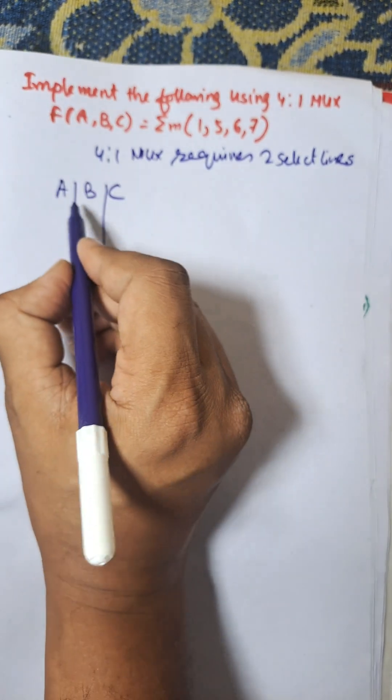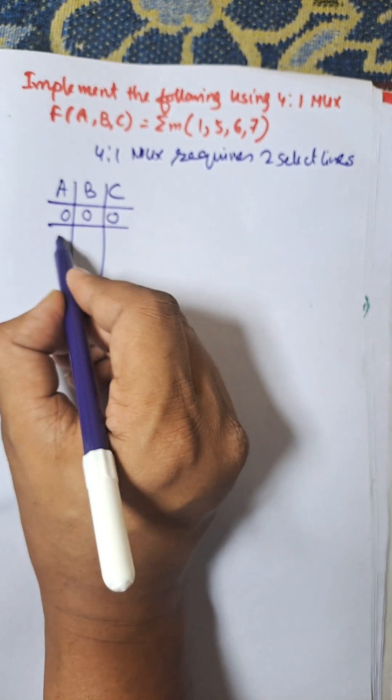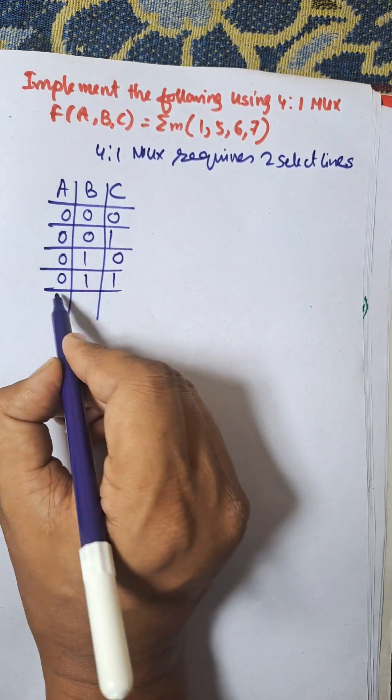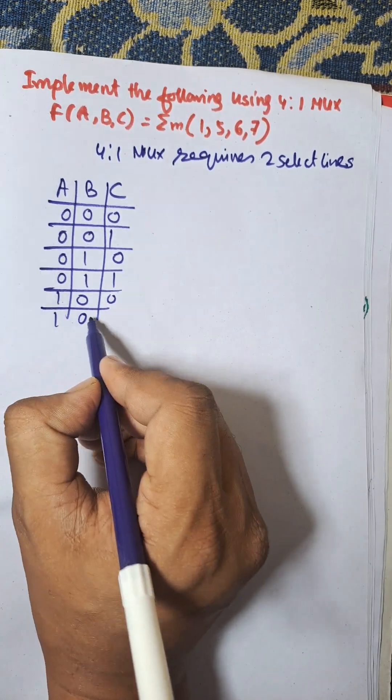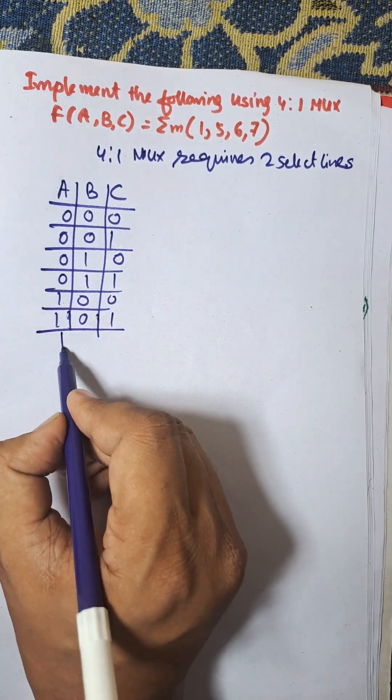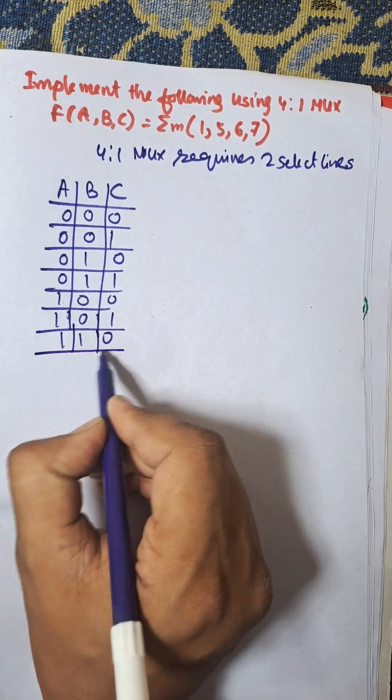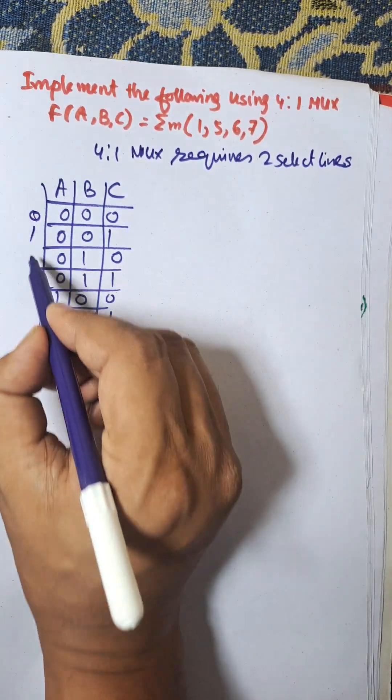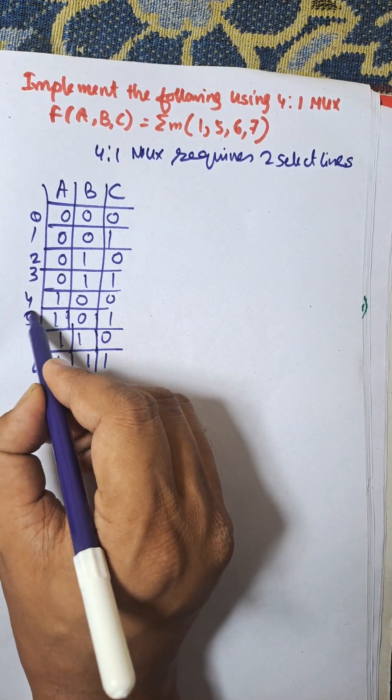And there will be eight combinations of values: 0,0,0; 0,0,1; 0,1,0; 0,1,1; 1,0,0; 1,0,1; 1,1,0; and last one is 1,1,1. And the corresponding decimal values: 0, 1, 2, 3, 4, 5, 6, 7.